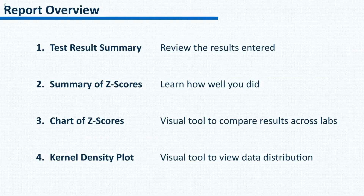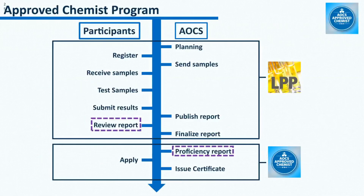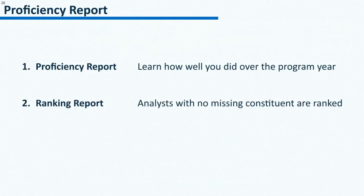Now we have viewed the four parts of a report. The results are listed in the test result summary. The z-scores are listed in the summary of z-scores. The cross-lab comparisons of z-scores are made easier by the chart of z-scores. And the data distribution is presented by the kernel density plot. In addition to the quarterly report, there is also the proficiency report, which is published each year. The proficiency report has a performance summary, which determines if an analyst is qualified for the approved chemist status. The proficiency report has two parts: the proficiency report and the ranking report.